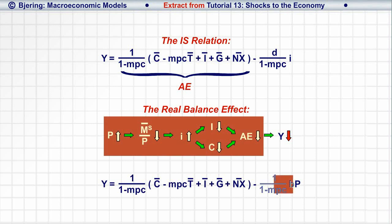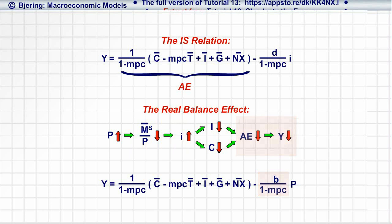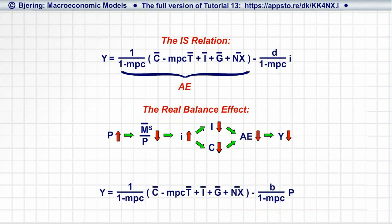And the fraction is the multiplier, indicating the effect of a change in AE on equilibrium Y, so that this term indicates the real balance effect. This relation is the aggregate demand, or AD relation.